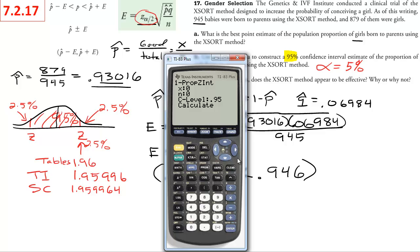And then what is your n? Well, n was 945. If you were doing it at a different confidence level, you would just change that, but we were doing it for 95%. So then you choose calculate, and there you have it.